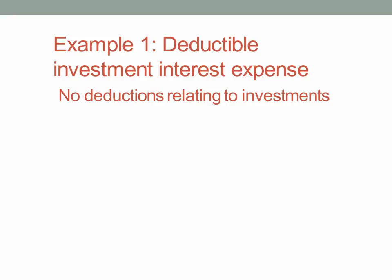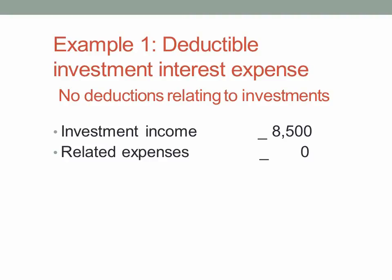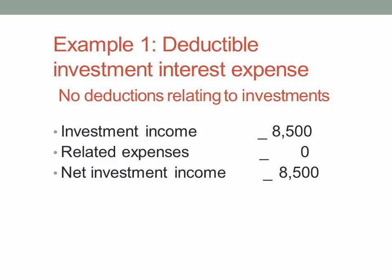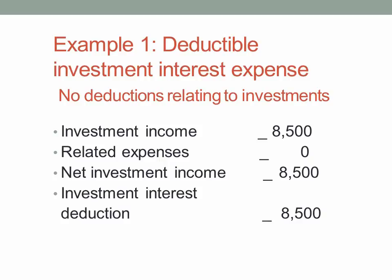The template on the next slide shows we take the $8,500, reduce it by zero because there are no deductions, and that's the maximum amount of the $20,000 we can deduct. The excess becomes a carryover to a future period. The first step is to define our investment income from Schedule B, Schedule D, and Schedule E for annuities and royalty income. Then we determine whether we have any related expenses net of the 2% rule. In this case there are none, so our investment income equals our net investment income, and we can deduct up to $8,500 with the remainder carrying over.